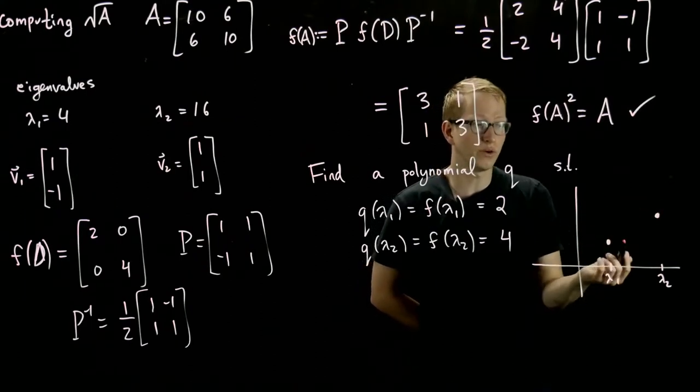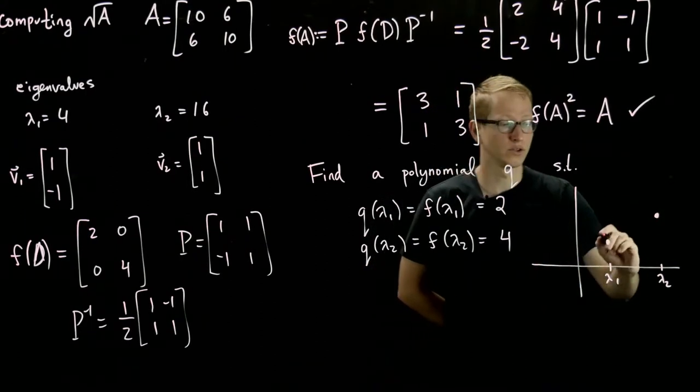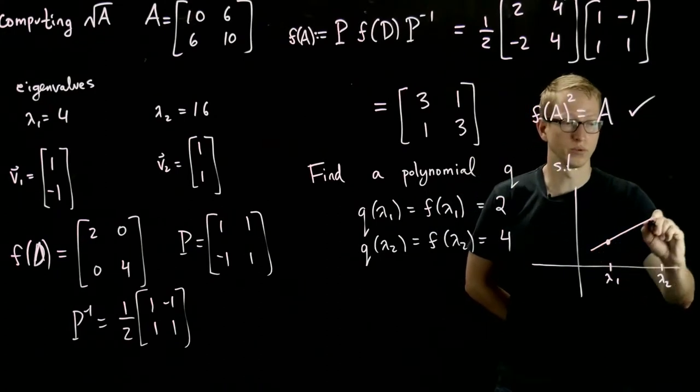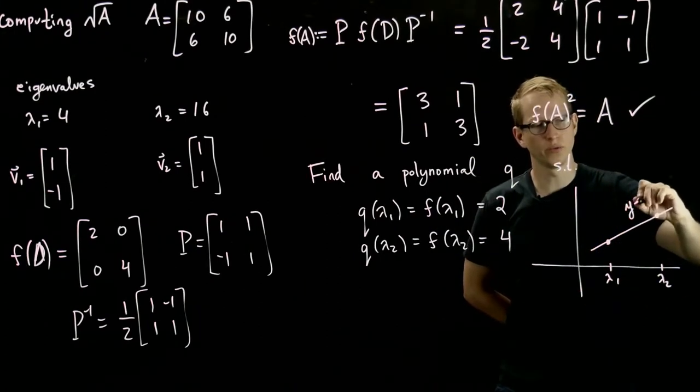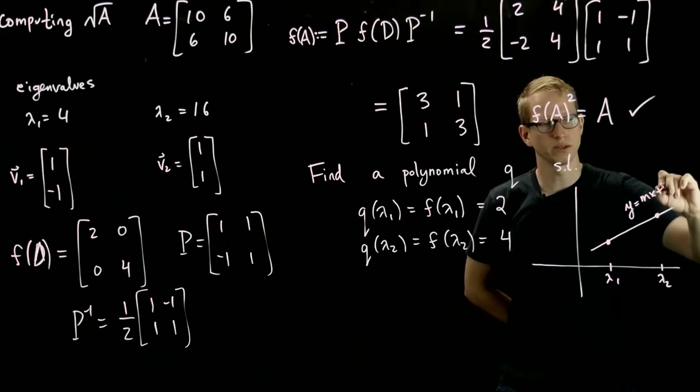Now, you know that two points determine a line, so a straight line goes through these two points. And that straight line is of the form y equals mx plus b.